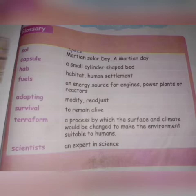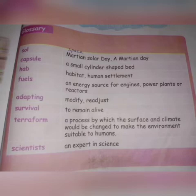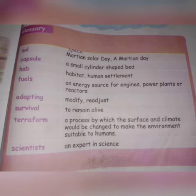Let us go for the revision of meanings in page number 81 in your textbook. Soul — Martian sol day. Capsule — a small cylinder-shaped bed. Hab — habitat or human settlement. Fuel — an energy resource for engines, or you can write 'power plants'. I prefer you all to write 'power plants' — P-O-W-E-R P-L-A-N-T-S — it is easy to write.